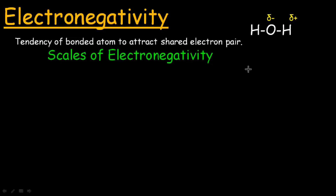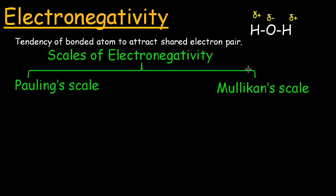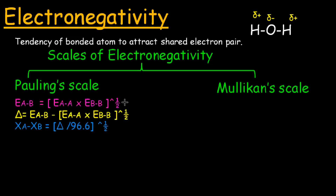Electronegativity is determined by scales devised by Pauling and Mulliken. The Pauling scale is based upon the value of bond energy.